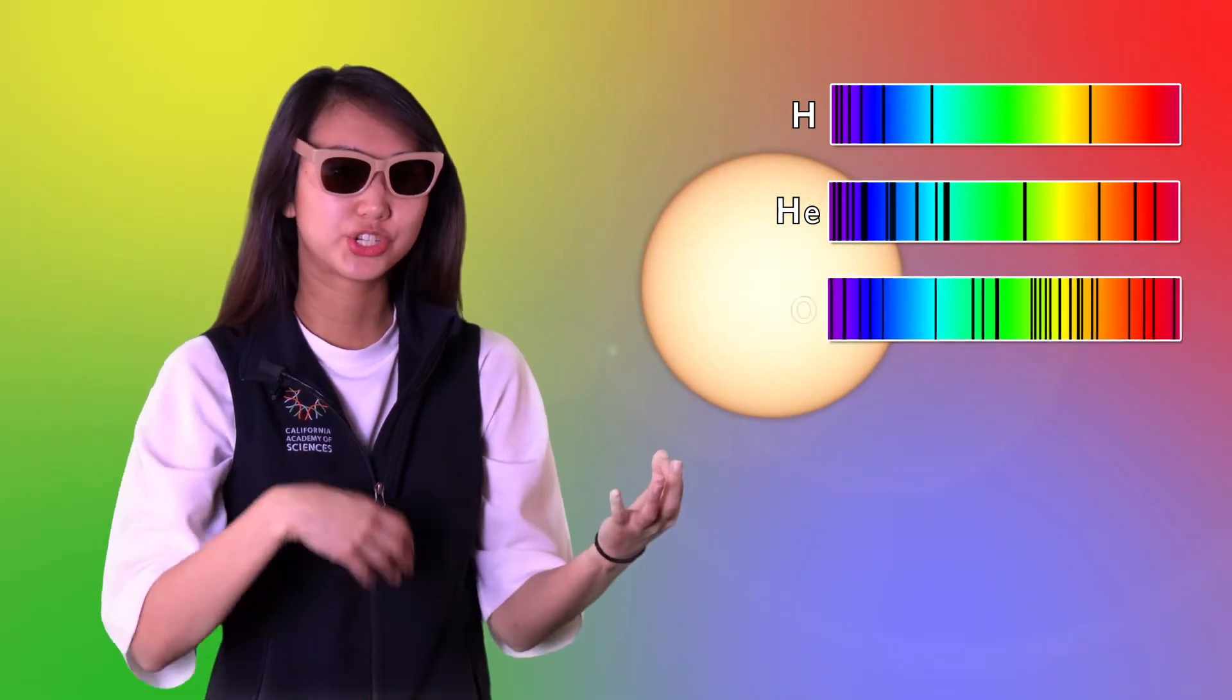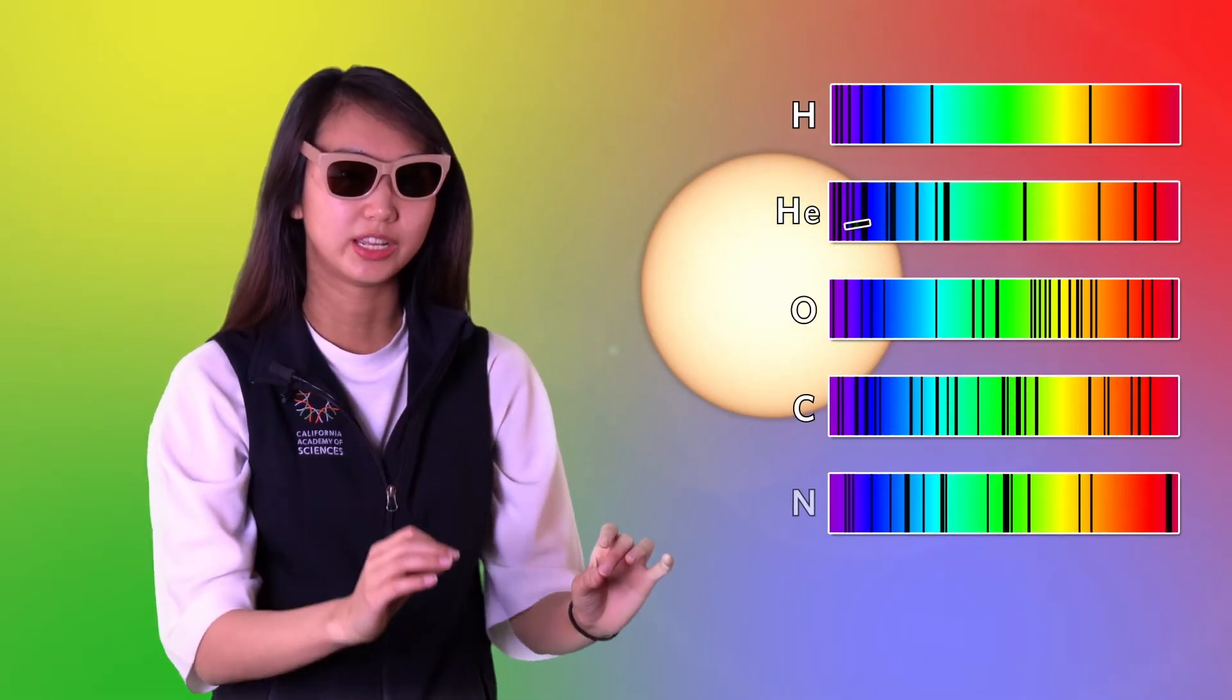This is how scientists understand that the sun is made up of mostly hydrogen, a little bit of helium, and a teeny bit of oxygen, carbon, nitrogen, and neon.